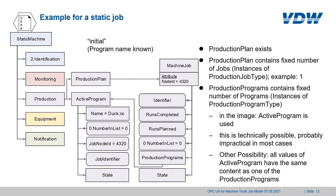This leads us to the next example: the static job. As jobs are modeled now, the production plan node exists in the static machine and contains a fixed number of jobs — this is the static part. In this example it is exactly one job. The production programs node in the static job contains a fixed number of programs which are instances of production program type.